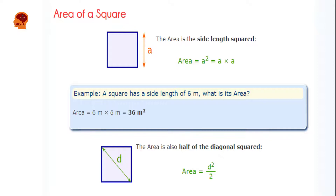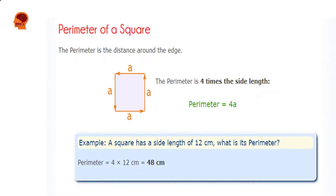The perimeter is the distance around the edges of a square. The perimeter equals four times the side length: Perimeter = 4 × length. For example, a square has a side length of 12 centimeters. From the formula, Perimeter = 4 × 12 centimeters, which gives you 48 centimeters.